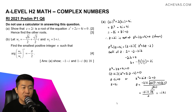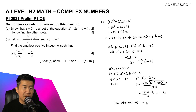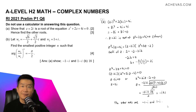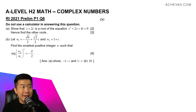So the other two roots are z = 1 − i and z = −1 − i. The first thing we want to do in Part B is to convert w1 and w2 into their Euler form. Let's find the modulus of w1.